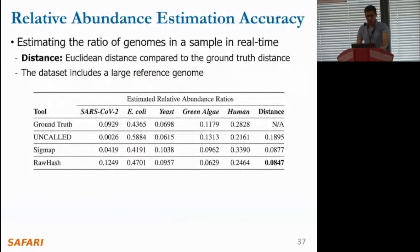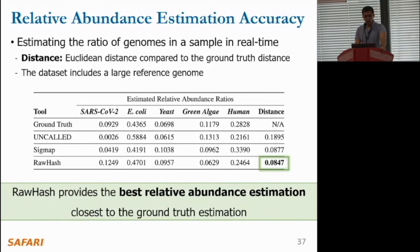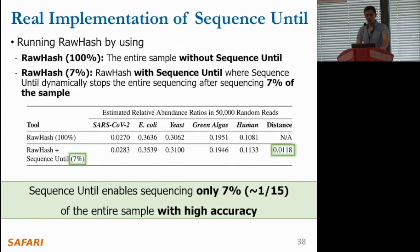For smaller genomes, the accuracy of RawHash is on par with UNCALLED and Sigmap, although these tools usually provide better accuracy than RawHash in those cases. We also look at the relative amounts estimation results. This table shows the abundance estimation that each tool makes based on their mapping and their Euclidean distance to the ground truth estimation — lower is better. We find that RawHash provides the best relative amounts estimation, closest to the ground truth, which is consistent with the best read mapping accuracy results for large genomes.